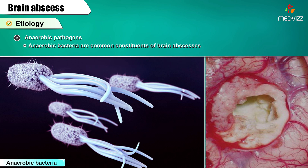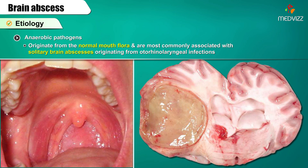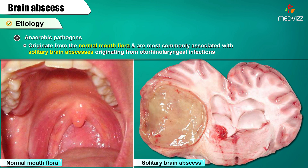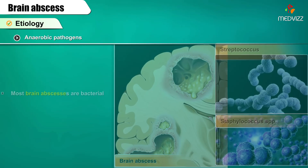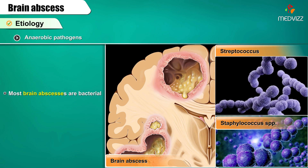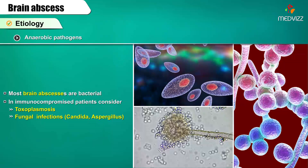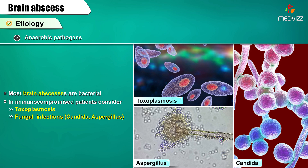Anaerobic bacteria are common constituents of brain abscesses. These organisms generally originate from the normal mouth flora and are most commonly associated with solitary brain abscesses originating from otorhinolaryngeal infections. Most brain abscesses are bacterial; however, in immunocompromised patients, consider Toxoplasmosis and fungal infections such as Candida and Aspergillus.